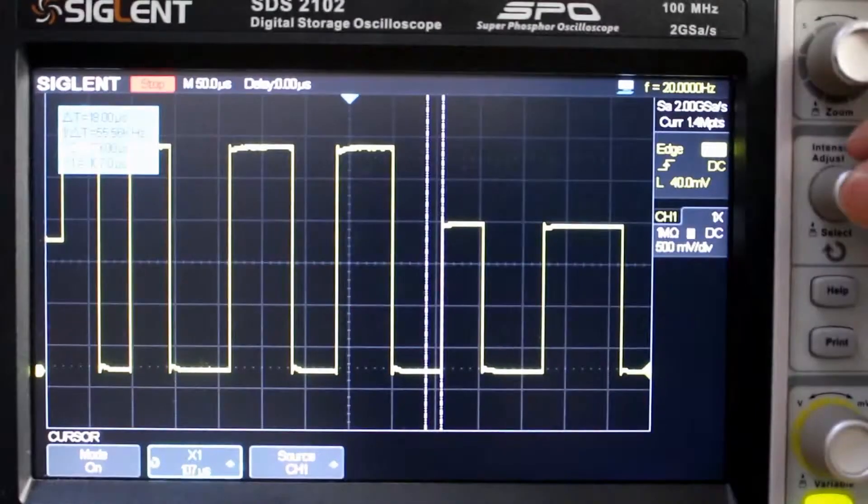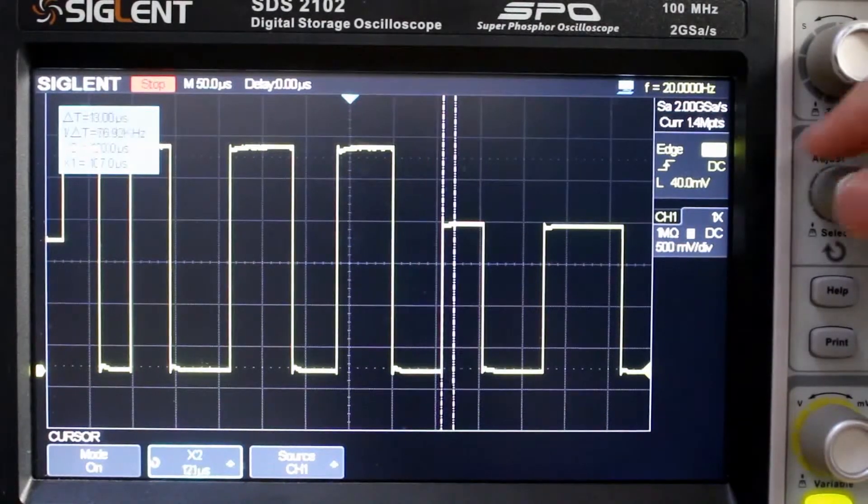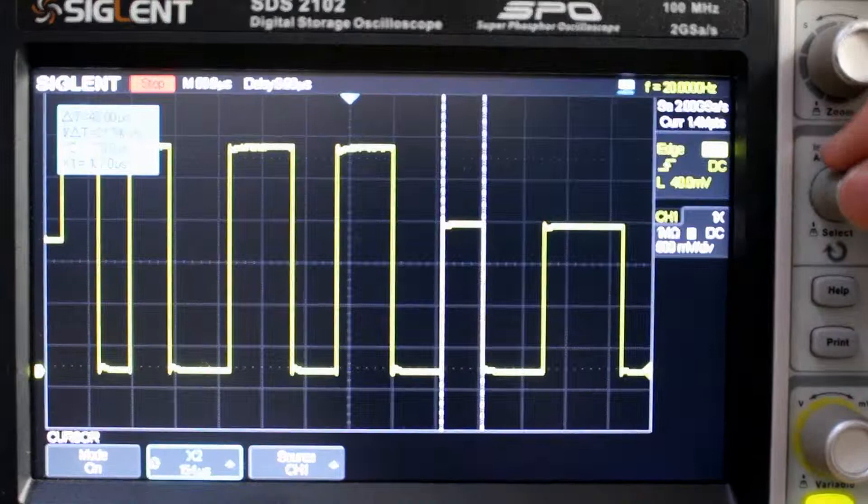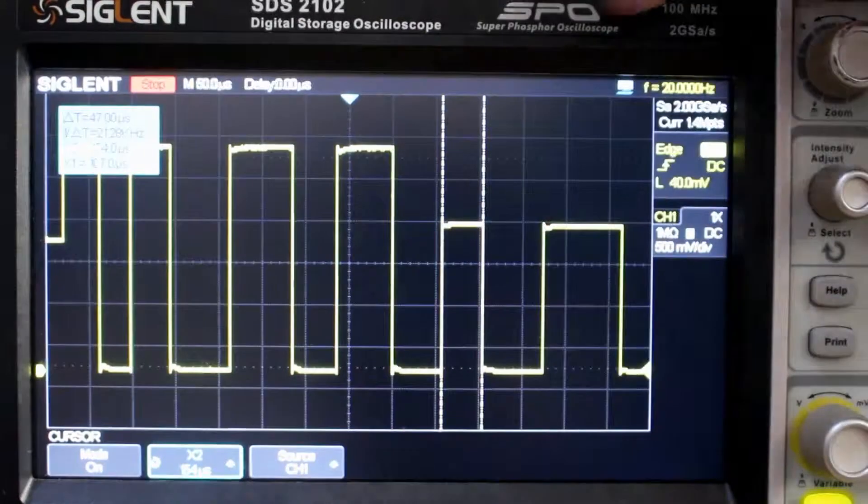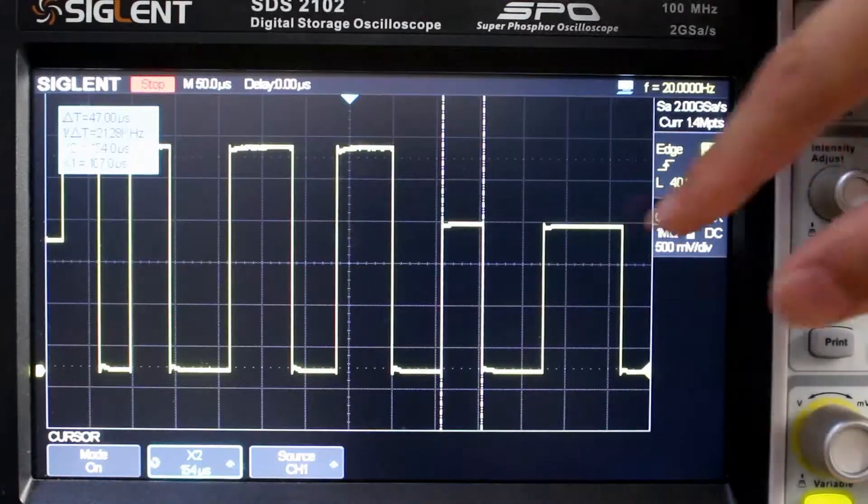Okay, so we're moving the cursors right now because we need to measure the time of the small pulse and then the wider pulse. So that's about 47 microseconds, okay, for the small one.